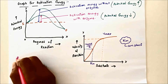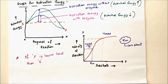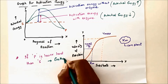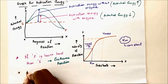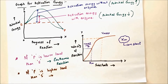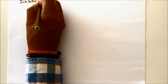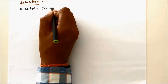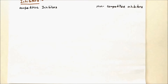With respect to activation energy, if the product is at a lower energy level than the substrate, it is an exothermic reaction. If the product is at a higher energy level than the substrate, it is an endothermic reaction.